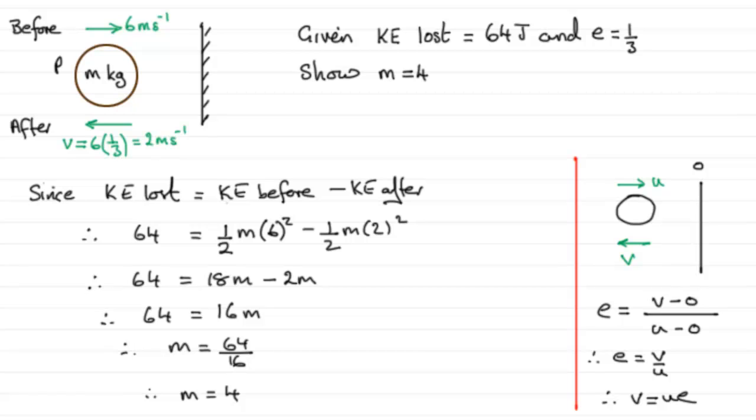so that's why we should remember this result that when something is moving with a speed of U before it hits the wall it bounces back with the speed of UE all right and that's what I used up here just saves time